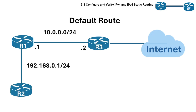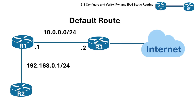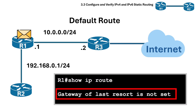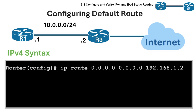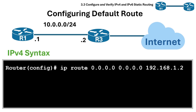Static default routes are frequently used when connecting a network to the internet, allowing all outbound traffic to be directed to the internet service provider's gateway. For example, if no default route is set, the router will discard all packets with destination addresses not found in its routing table. This is how we configure a default route in IPv4.